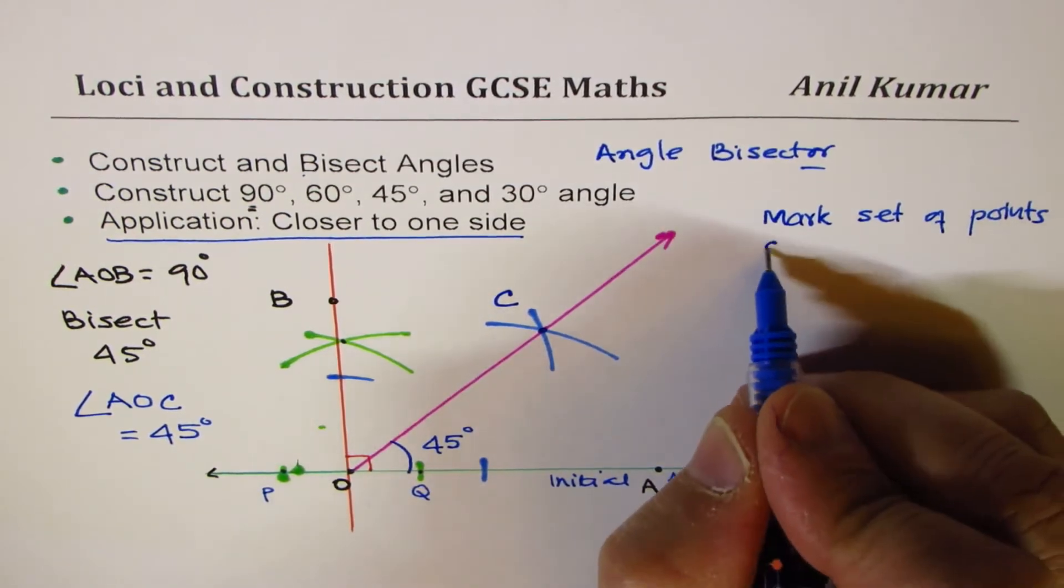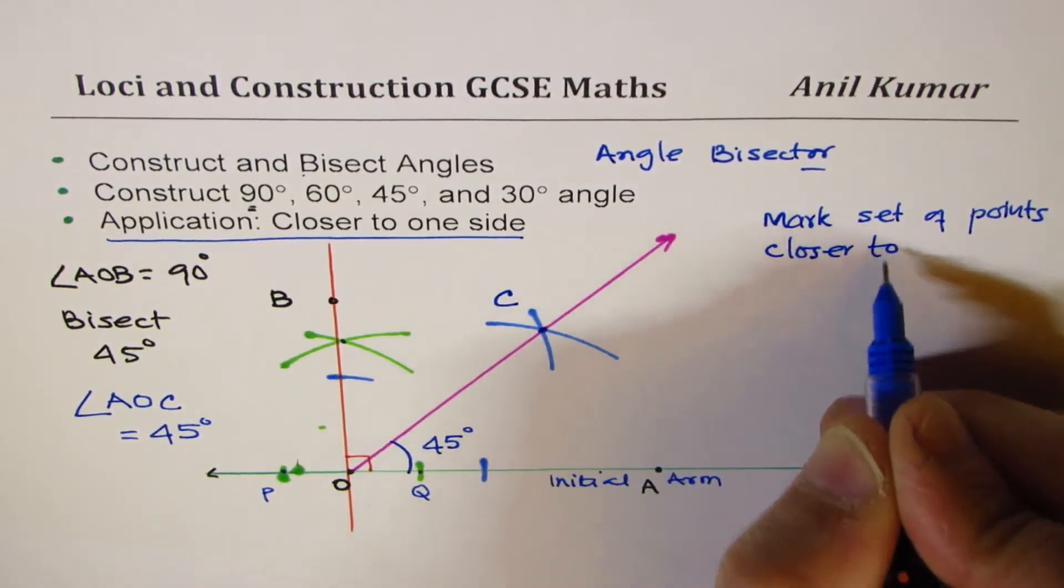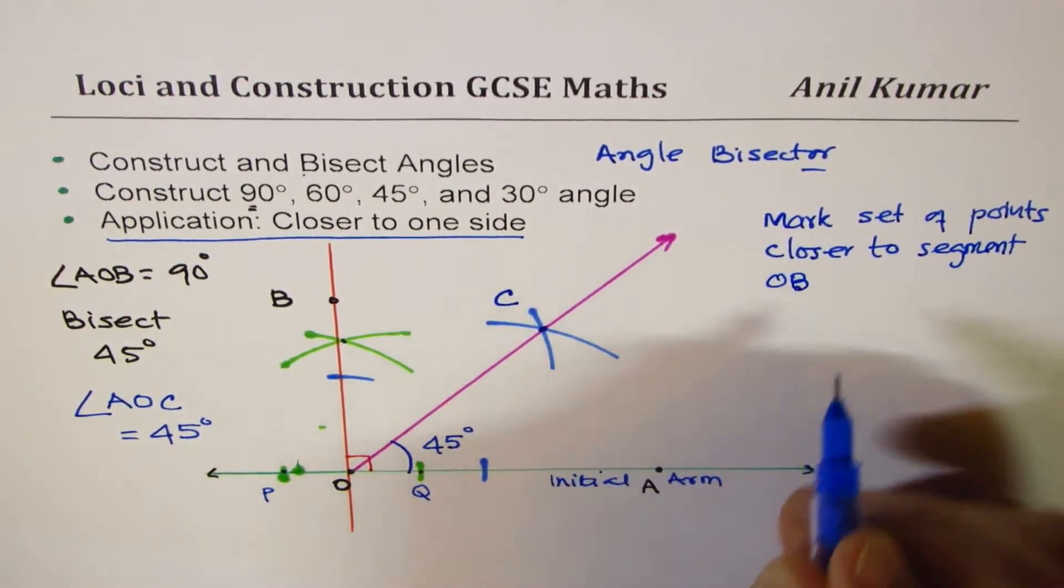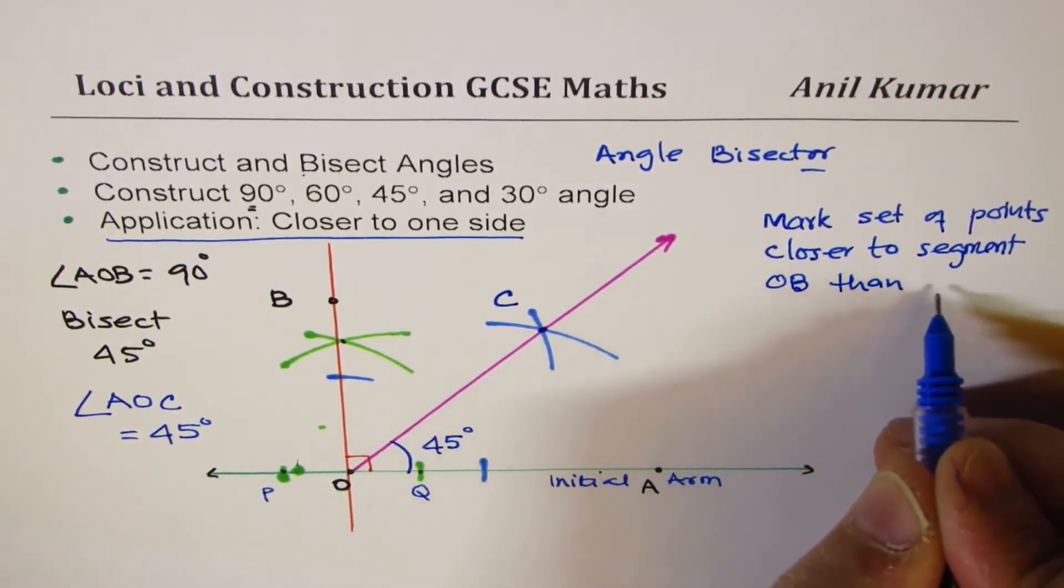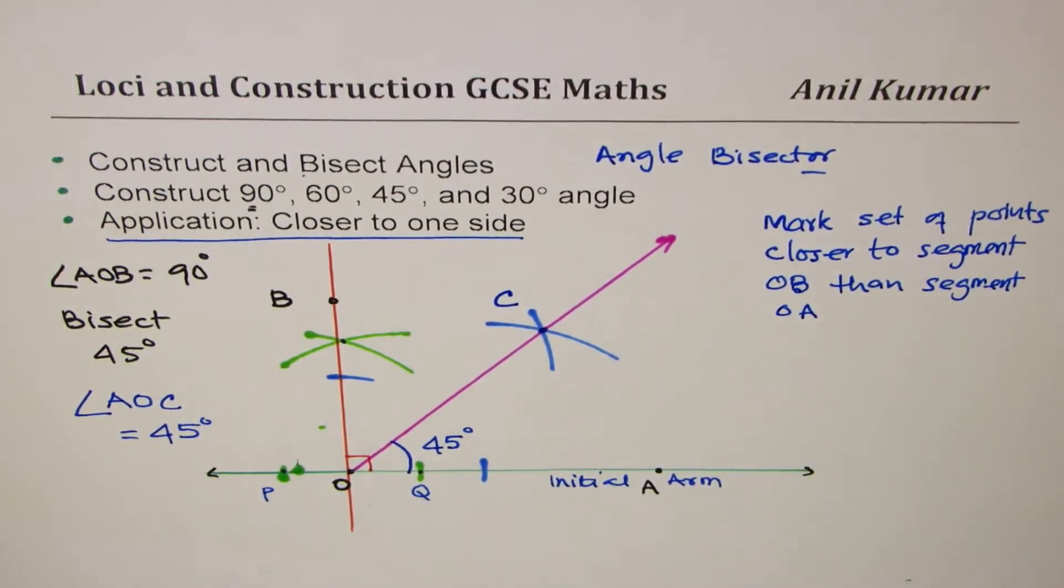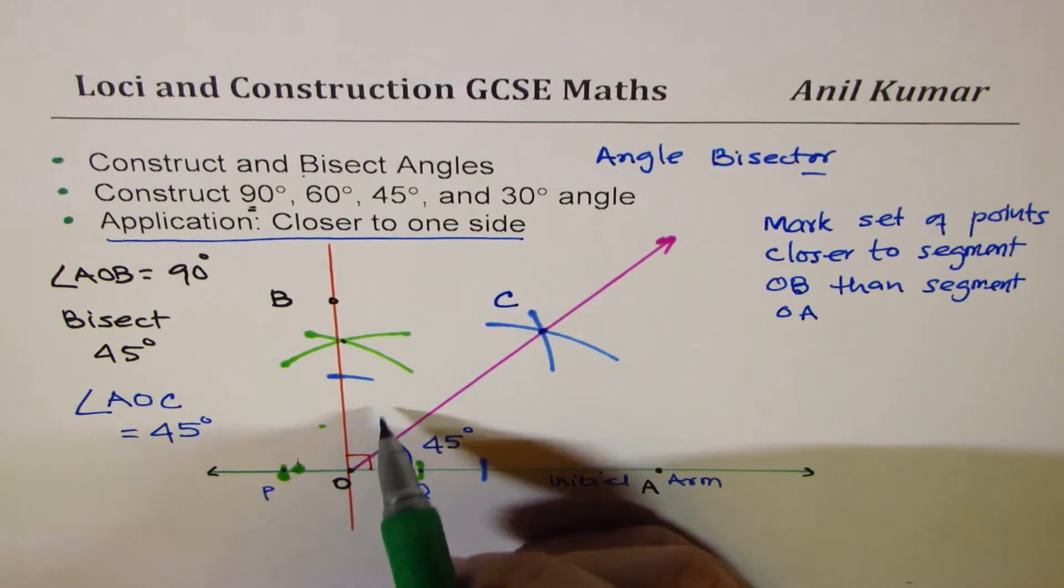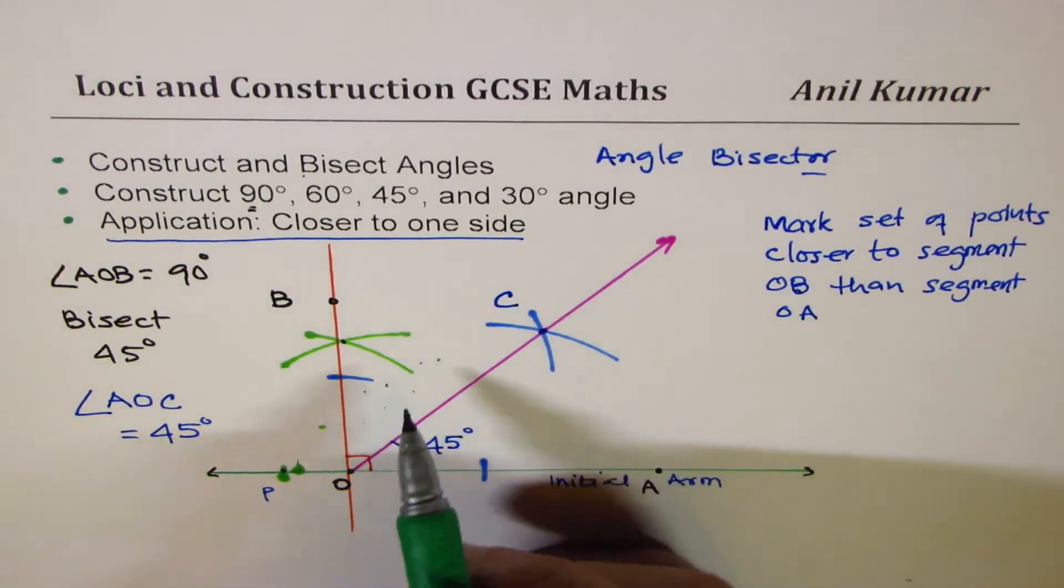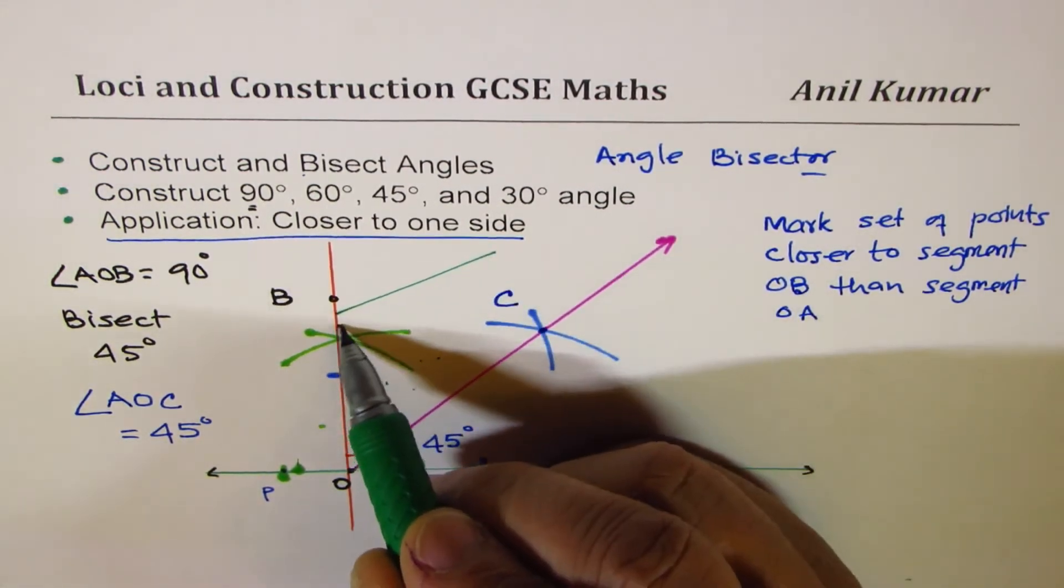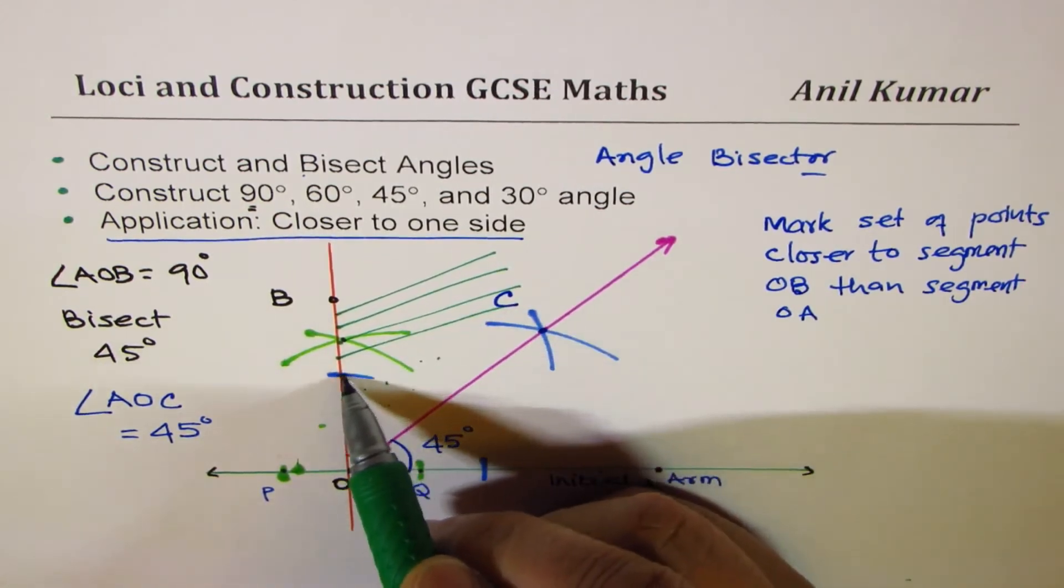Mark set of points closer to segment OB than segment OA. So where are the points which are closer to segment OB than segment OA? Can you tell me that? Clearly, this side is closer to OB. So all these points above the line are closer.